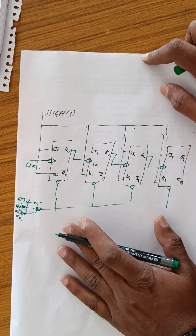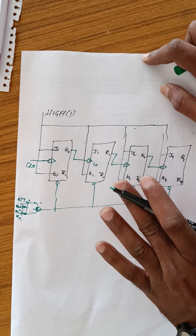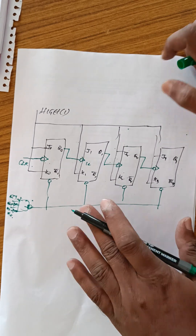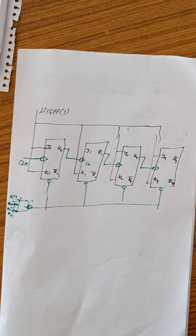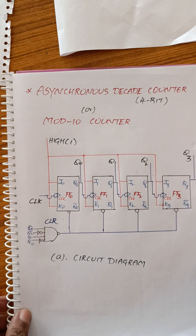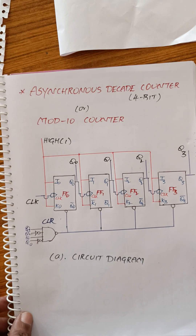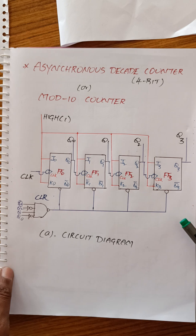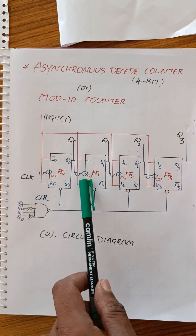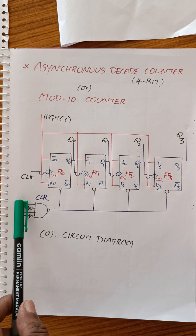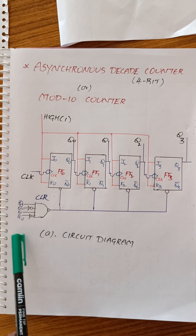Let us see the circuit diagram drawing process. The circuit has 4 flip-flops: flip-flop 1, flip-flop 2, flip-flop 3, and flip-flop 4, along with the clear circuit. The outputs are Q3, Q2, Q1, and Q0.